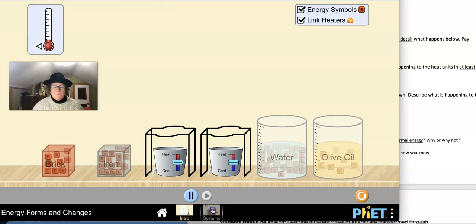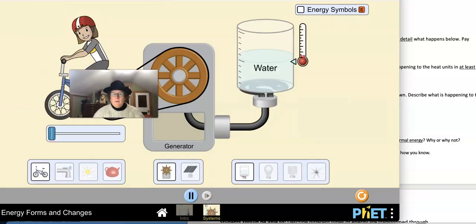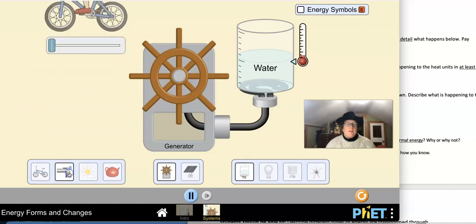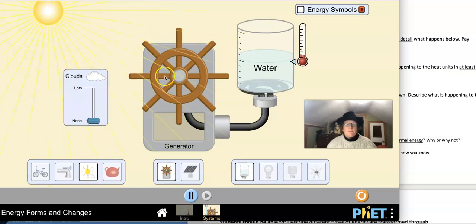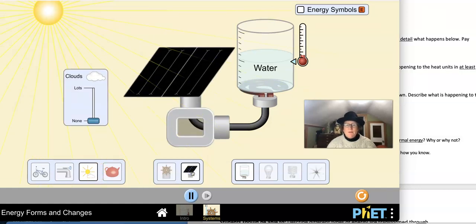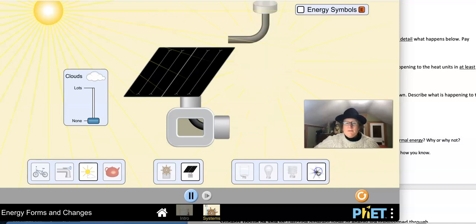Let's switch over to systems here. You'll notice you can make a number of systems by clicking on different elements. This isn't going to do any good here. The sun is for when you have a solar panel. You can put different things in this part of the system. You can boil water. You can have two kinds of light bulbs. This is an incandescent light bulb. And this is a compact fluorescent light bulb. We also have LED light bulbs. And this is a fan.